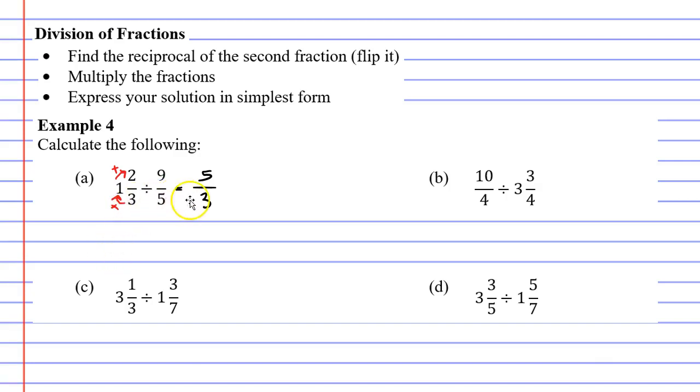It was 3 originally so my improper fraction has a 3 for the denominator. We also need to flip the second fraction. 9 over 5 becomes 5 over 9 and our divide symbol becomes multiplication.